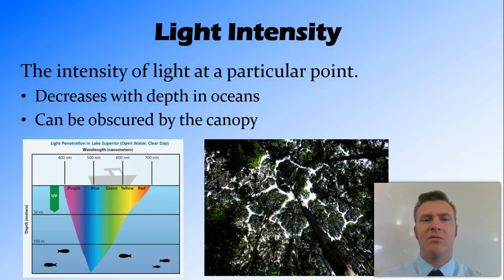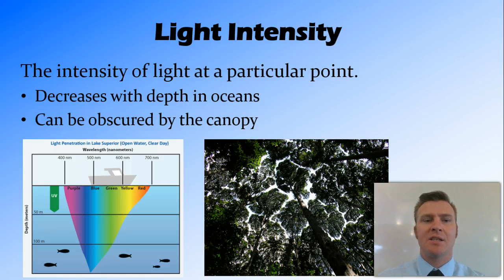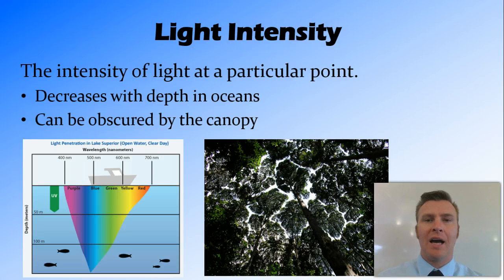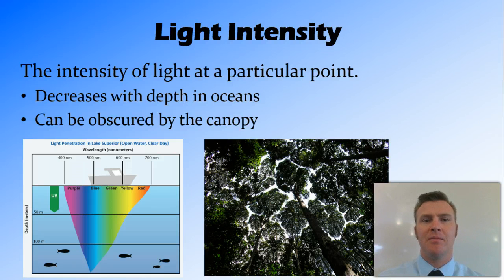Light intensity refers to how strong or intense the light is at a particular point. For example, in oceans, the light only penetrates so far — the top layer of the ocean has quite high light, like at the beach where you can see under the water. However, once you get much deeper, the light can't penetrate down that far.